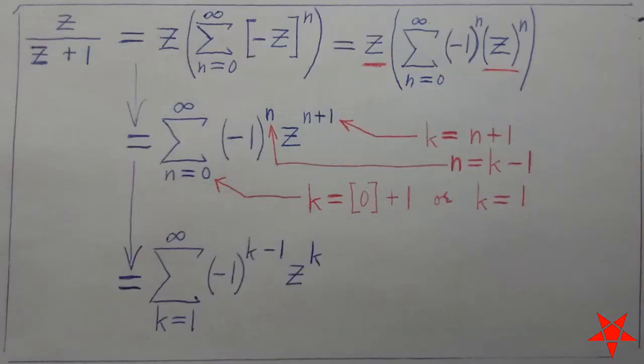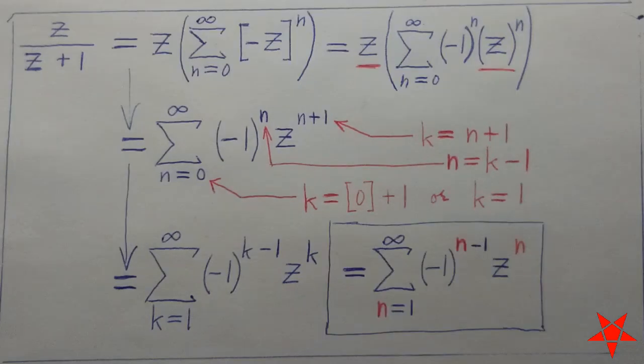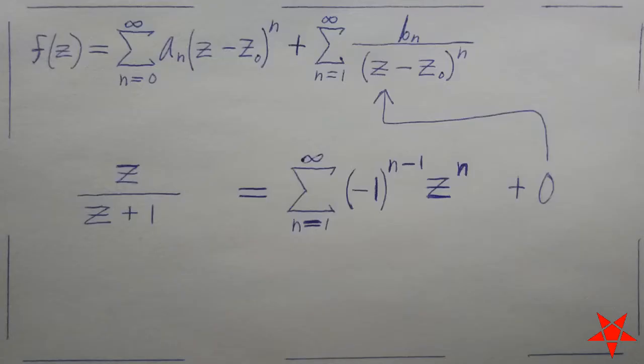Now that everything is in terms of a single index of summation, that being k, we can call it basically anything we want, as permitted by YouTube, and it may be rewritten as n as it was before. The result is a Lorentz series with no principal component, since there are no components where z has a negative exponent.